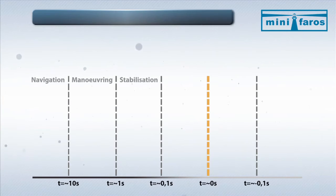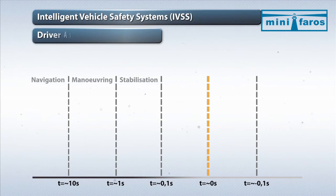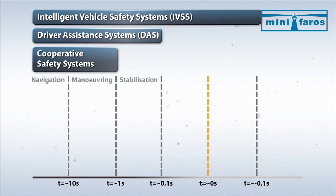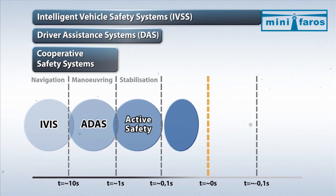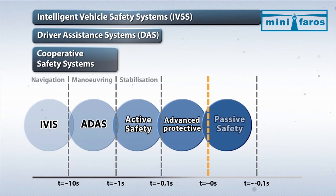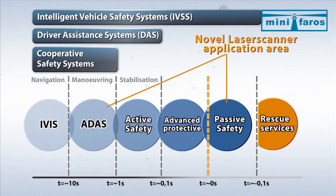The MINIFAROS laser scanner is adequate for short to medium ranges, thus covering various applications of advanced driver assistance. In order to design and evaluate the developed prototype, six applications have been selected for demonstration within the project. Three related to pedestrian protection and three relevant to the most frequent frontal crash scenarios.